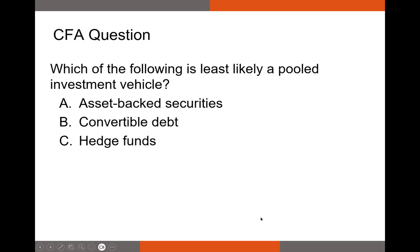Let's try a CFA-style question: Which of the following is least likely to be a pooled investment vehicle? A) Asset-backed securities, B) Convertible debt, or C) Hedge funds. The correct answer is B — convertible debt. Asset-backed securities pool many loans together and sell off securities representing a percentage of that pool. Hedge funds pool investor money together and manage it. Convertible debt is simply one bond or one debt issuance — not a pooled vehicle.